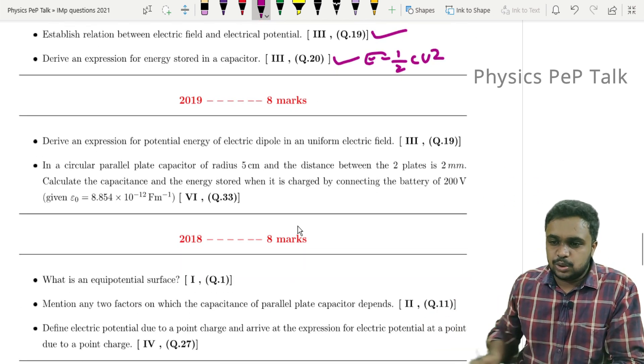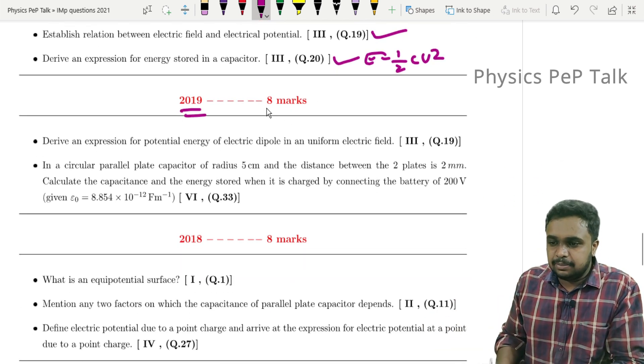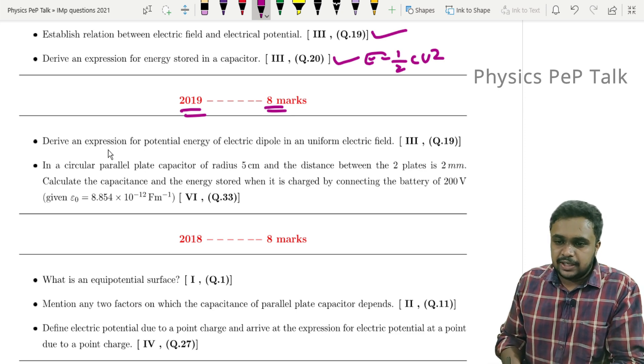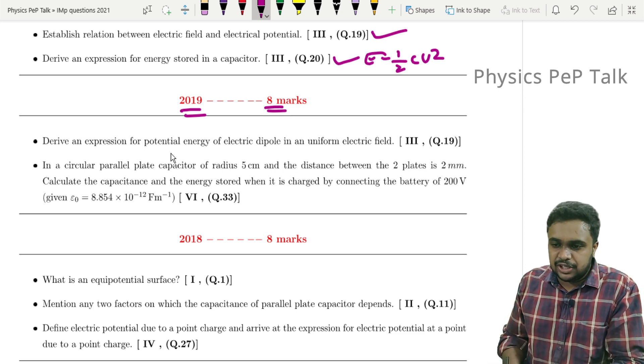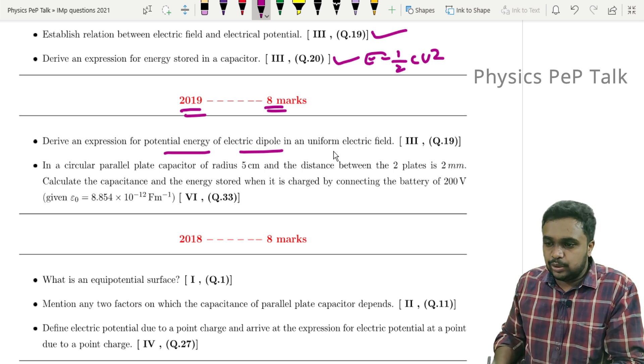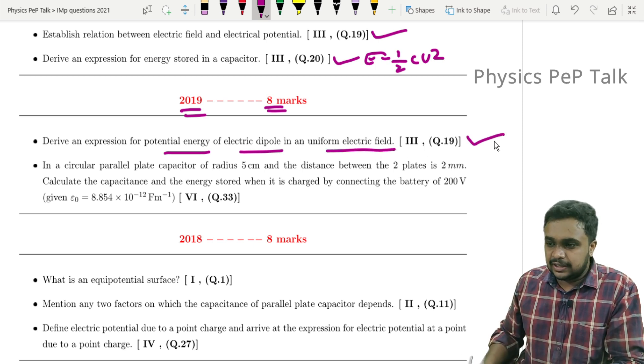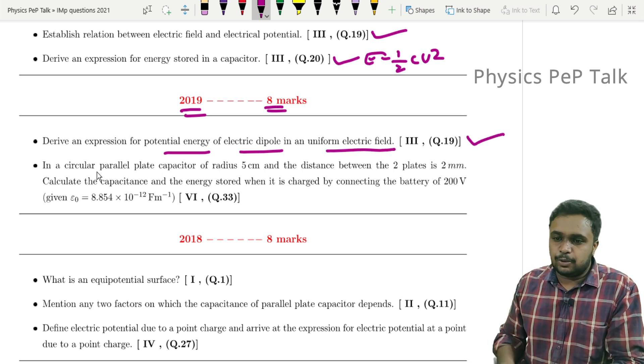Next, 2019 has eight marks from this chapter. Derive an expression for potential energy of electric dipole in a uniform electric field. This was asked for three marks, then there was a problem on capacitor.